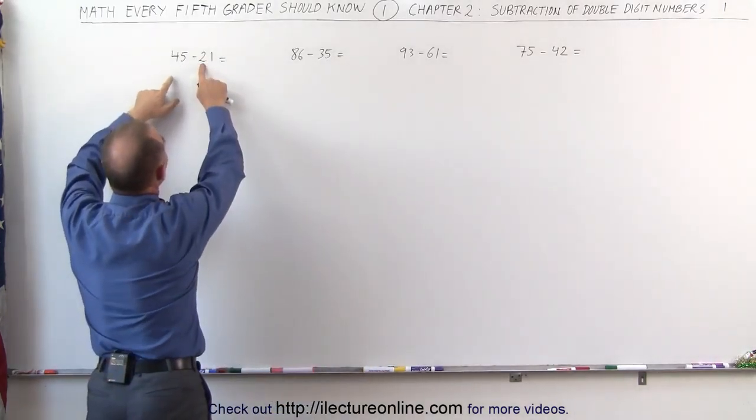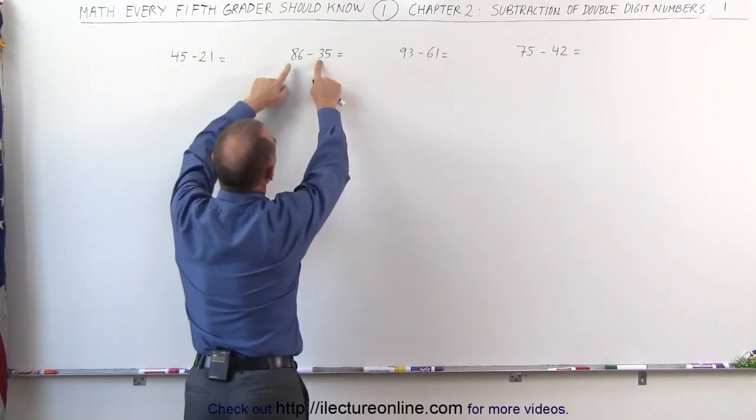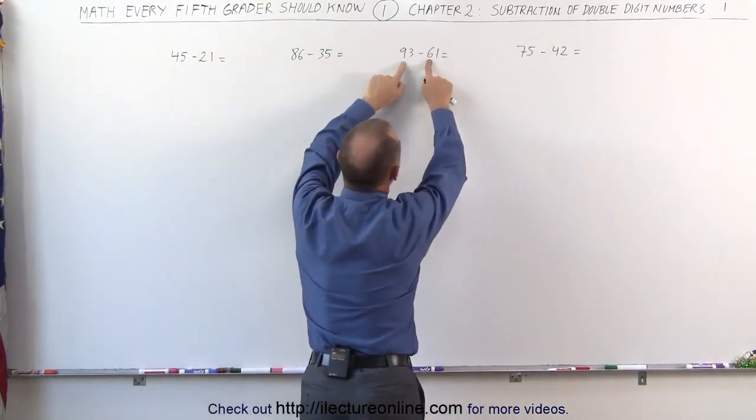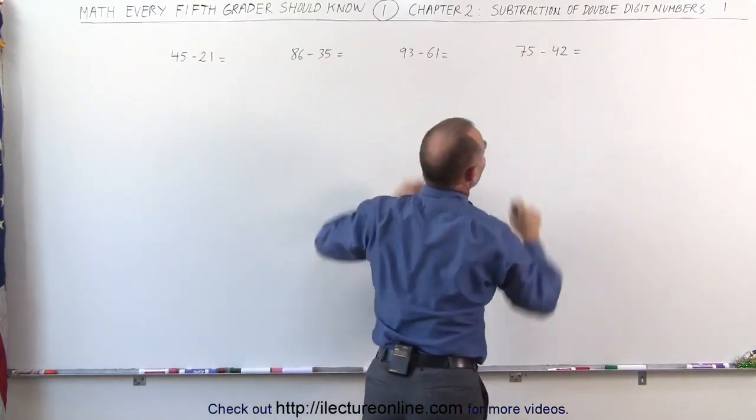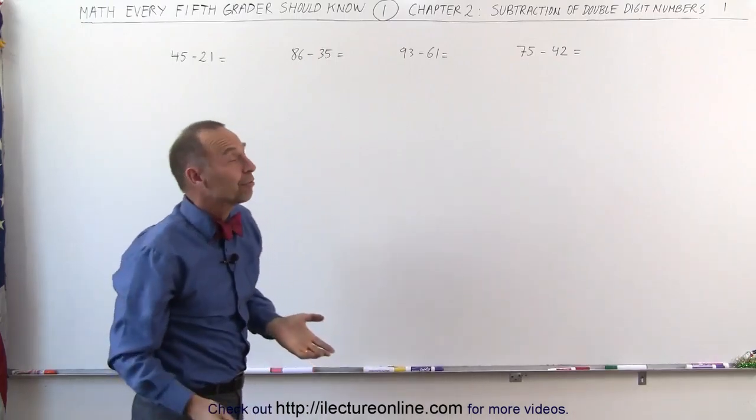Also notice that 20 is smaller than 40, 30 is smaller than 80, 60 is smaller than 90, and 40 is smaller than 70. So in that case it's very straightforward.